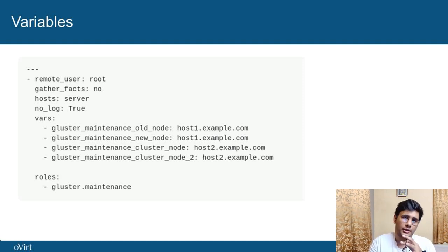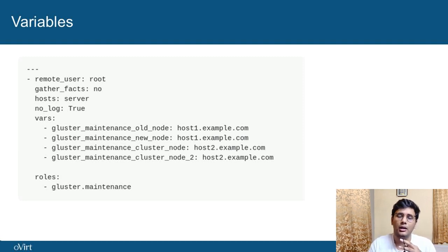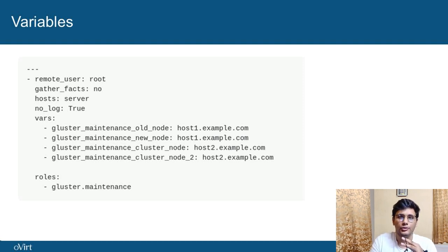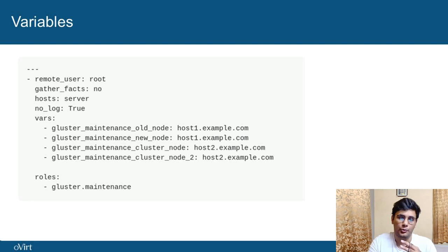If you are going with different node FQDN, the old node and the new node can be different. Then there is Cluster Ansible Maintenance Node — that is a node which is not the old node, but is in the cluster. For example, let's say there are three hosts in a cluster and host B is corrupted. Host A would be Maintenance Cluster Node, and host C would be the Maintenance Cluster Node 2.